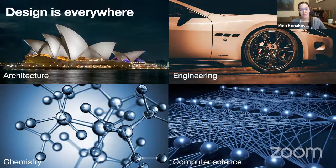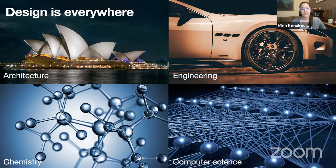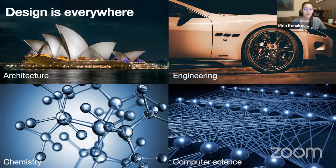And design is everywhere, behind everything we need to create, no matter if it's a physical or a virtual object. We need to design buildings, art pieces, we need to design engines, machines, and products. In chemistry, we design new molecules, we design chemical ingredients, drugs, and so on. And in computer science, we design abstract forms, for example, neural network architectures, data structures, programming languages, etc.